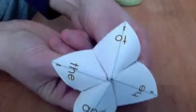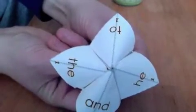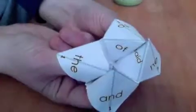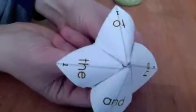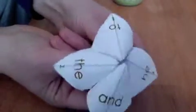And then you have all four corners together like a beautiful flower, and you want to open it and close it like so. So that is the operation of the cootie catcher.